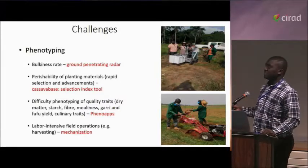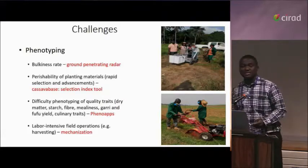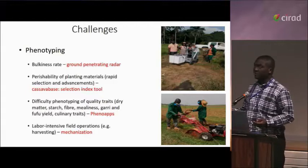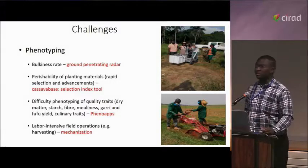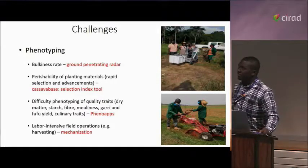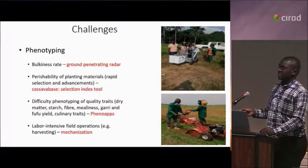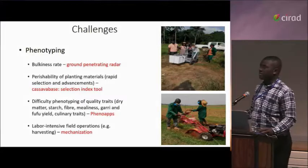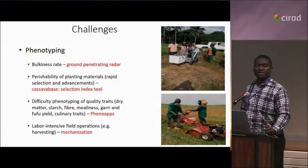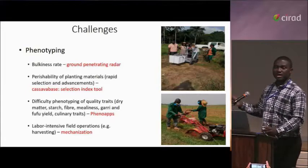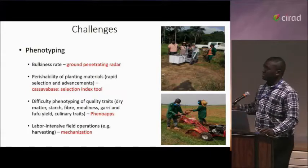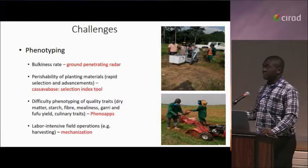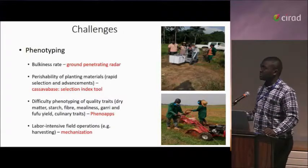Regarding perishability of planting material, we want to rapidly select and advance selected materials, and we have used CassavaBase selection tools to rapidly do that. Then there is the difficulty in phenotyping quality traits — dry matter, starch, fiber, mealiness, gari, fufu, and other culinary traits. Phenolab has helped in rapidly assessing some of these traits. There are also labor-intensive field operations, where mechanization will help.